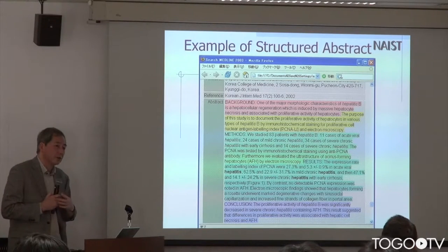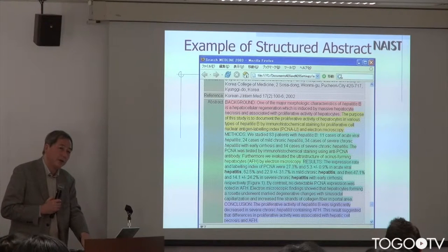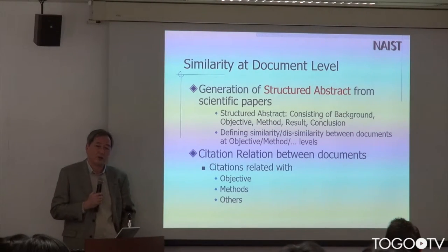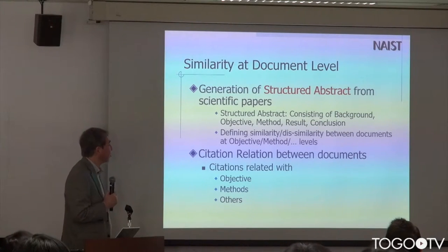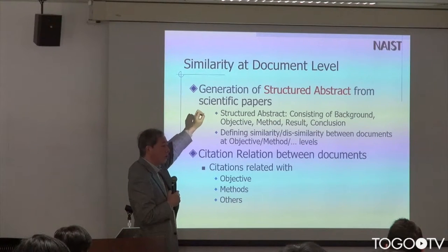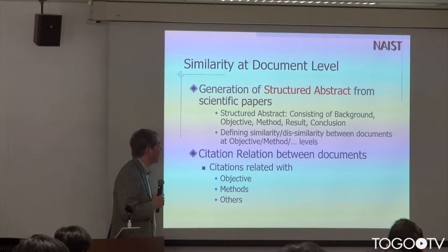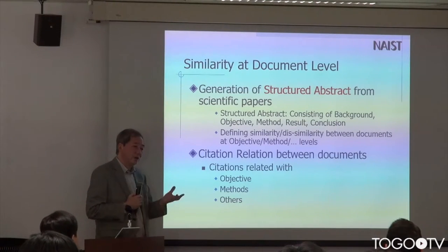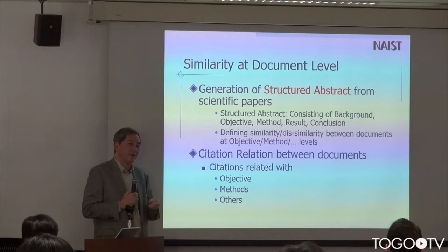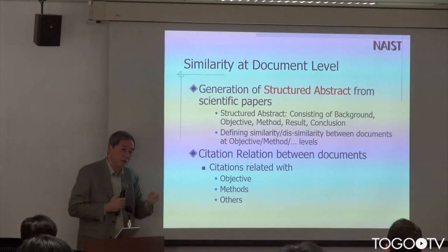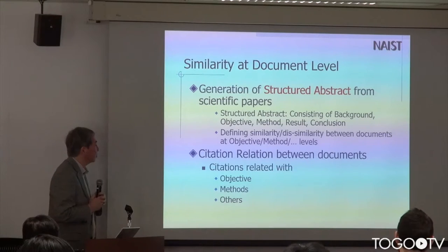Unfortunately, maybe 80% to 90% of journals — especially in our field — do not assume this kind of structured abstract. So if we can construct or generate a structured abstract from older papers, we can define similarity or dissimilarity between documents. We can say that two papers share a common objective but use quite different methods. In some cases we are interested in papers sharing the same objective but applying dissimilar techniques. By controlling the similarity and dissimilarity between those aspects, we can implement a more fine-grained approach to paper retrieval.